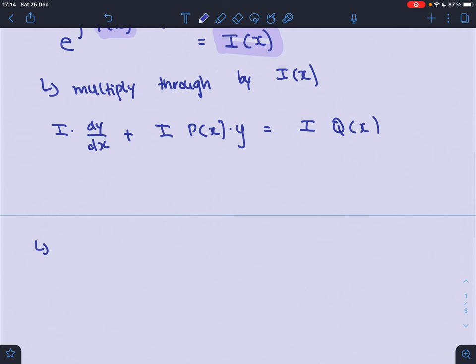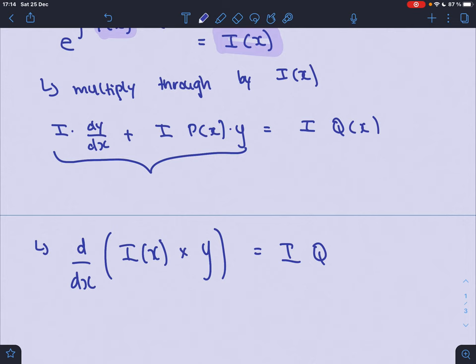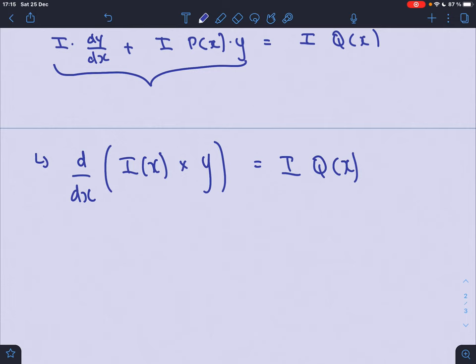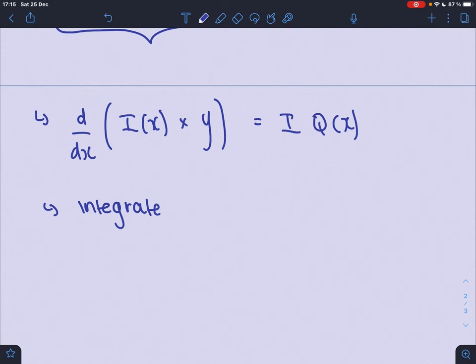So this can be simplified to d/dx of I(x) times y equals I Q(x). And you see, the reason you want to do that is because your goal, your objective here is to rearrange this equation to have just y on the left hand side. We want an expression in terms of y. That's the whole point of solving differential equations. You take an equation that has an expression for how y changes with x, and you want to just find y.